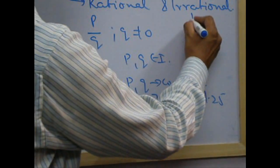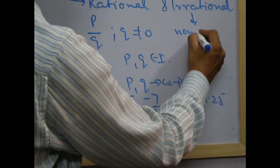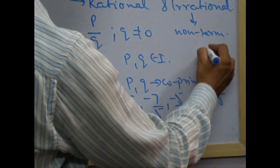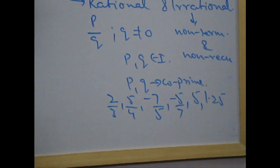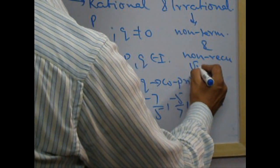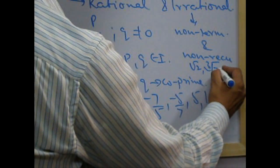What are irrational numbers? These are non-terminating and non-recurring decimal numbers. Non-terminating and non-recurring decimal numbers. For example, root 2, for example, cube root 7, etc.